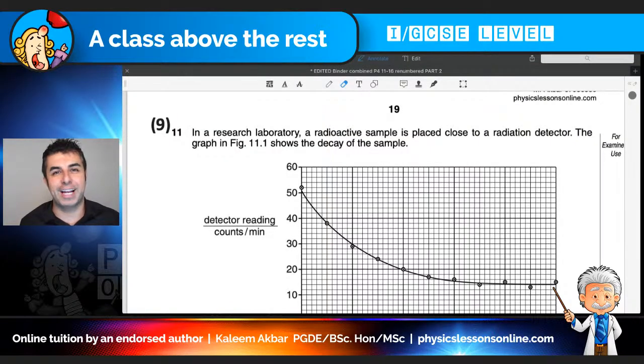Welcome to Akbar Academy. Today we are going to look at May/June 2012, Paper 3, Variant 2, question number 11. Today's topic is going to be half-life, background radiation, alpha particles and gamma rays.